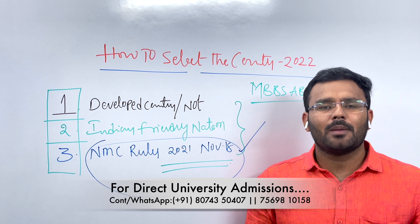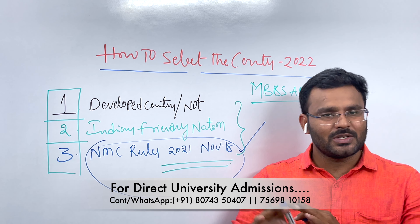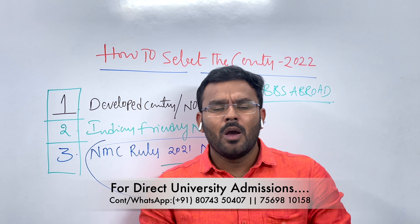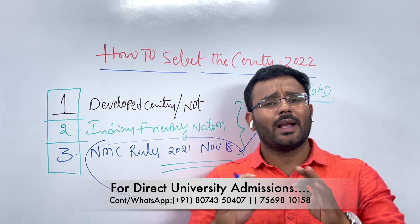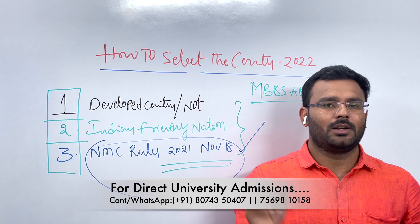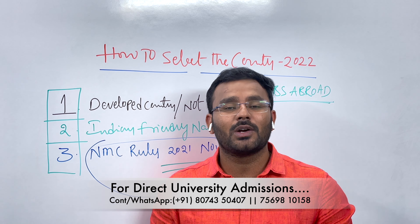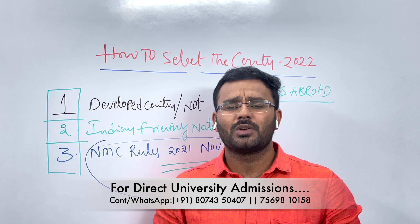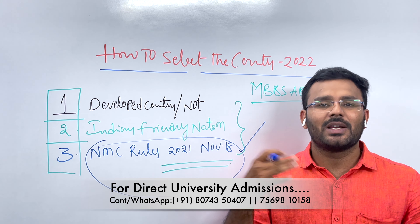A developed country will have 100% good relations with other countries. That is why we select a developed country. One key advantage is that developed countries offer very low economic budget education. In Russia, the average cost is about 3,000,000 rubles per year, and 90% of universities are at this rate. Government universities have 100 to 200 years of experience, are fully English medium, and are research medical universities.